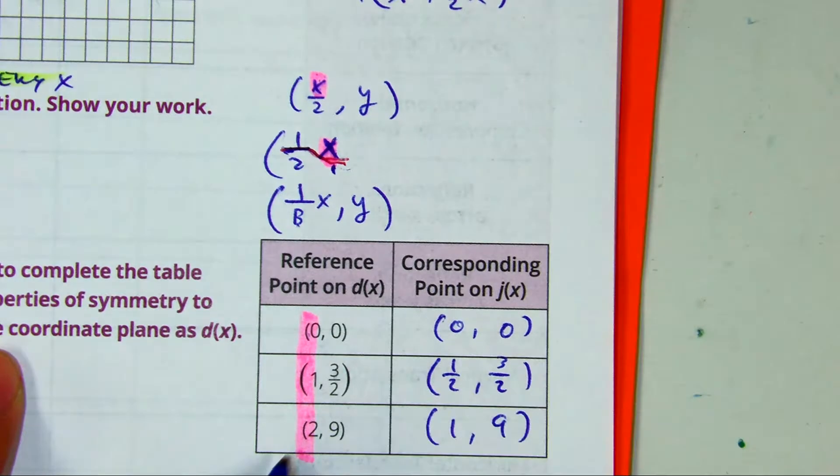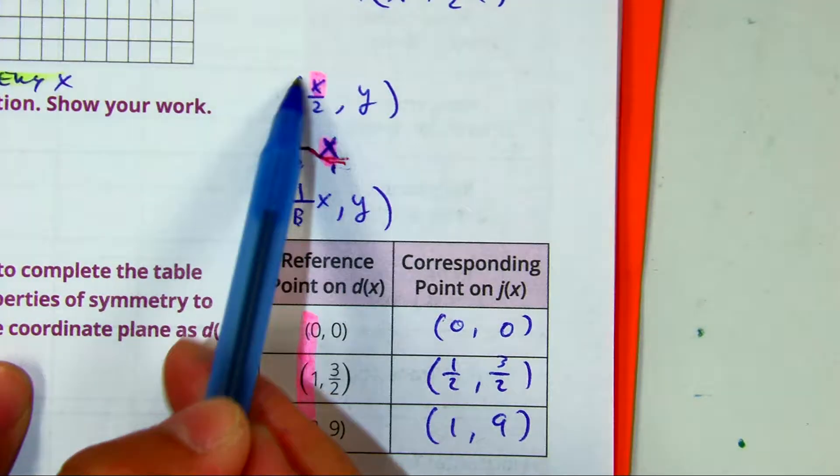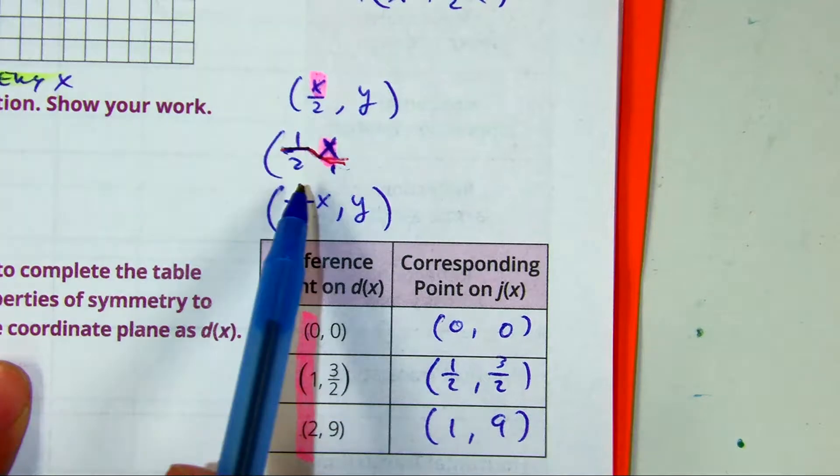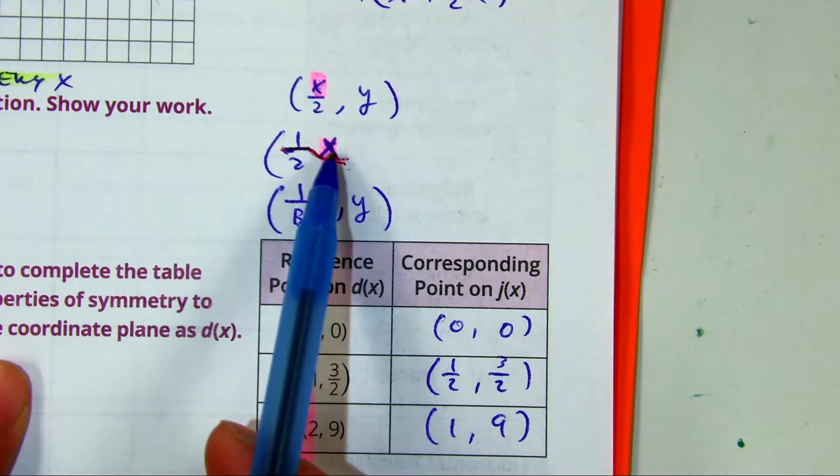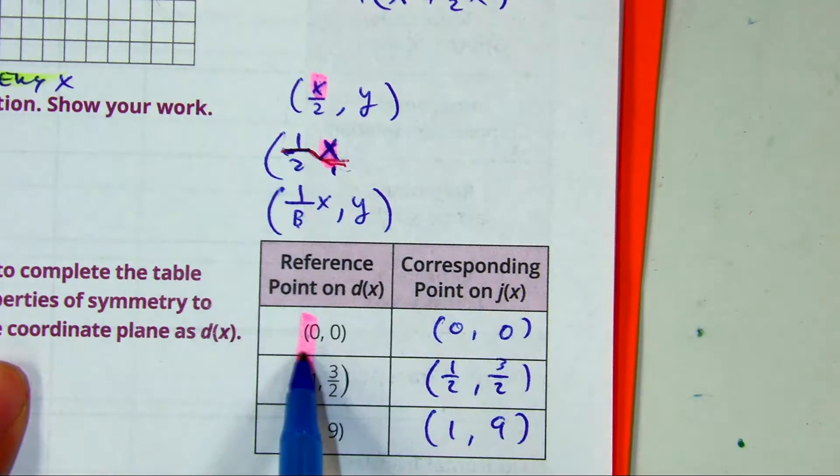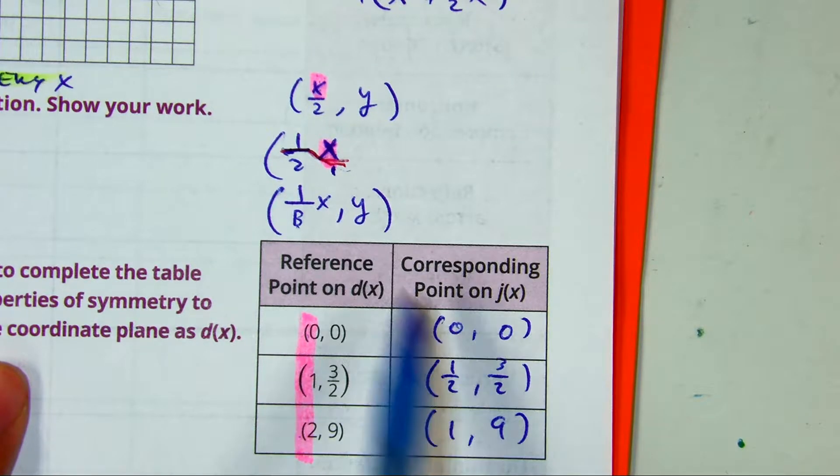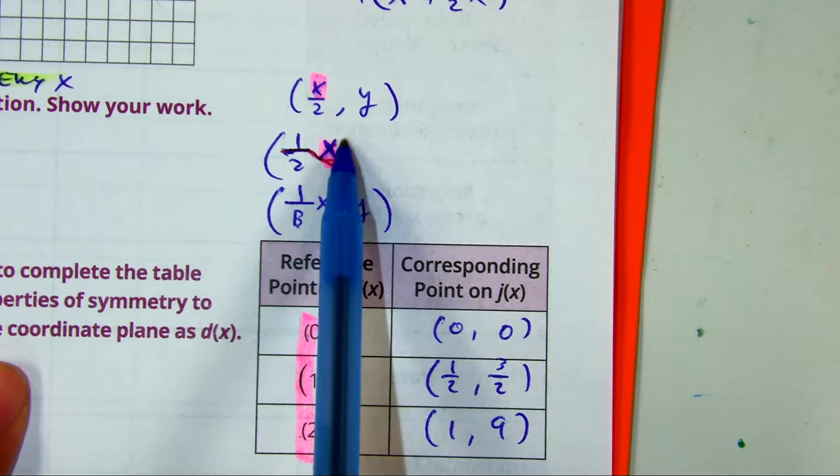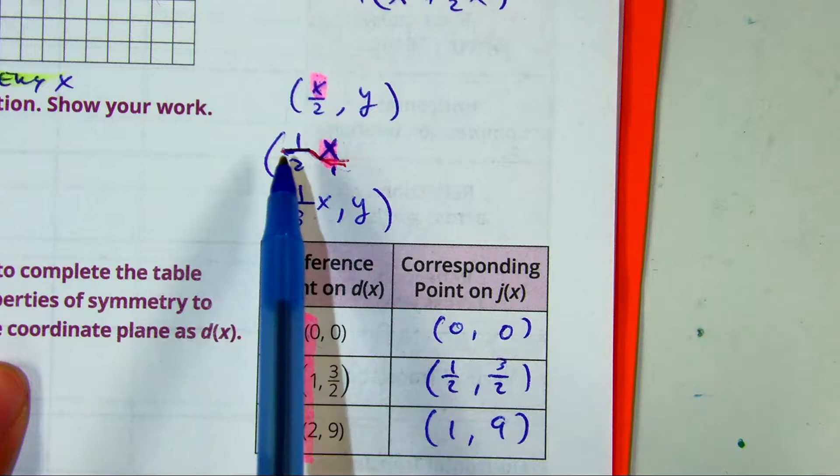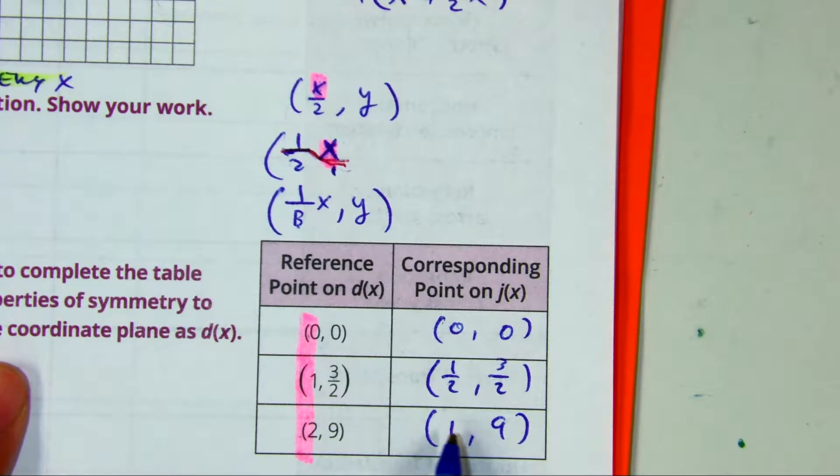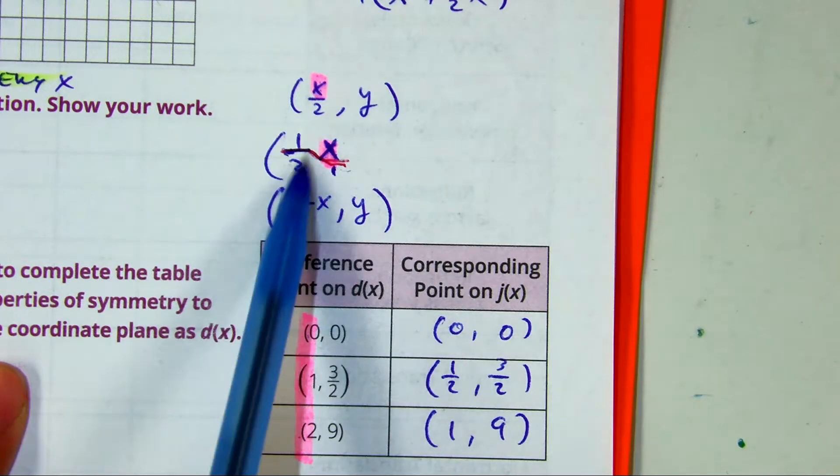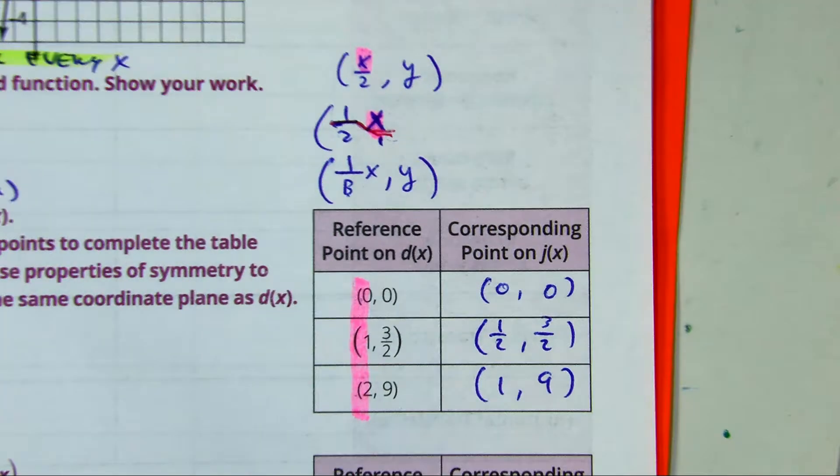Do you see how putting the 2 into this fraction was a lot easier than saying 1 half times that number? 1 half times 0 is 0. 1 half times 1 is 1 half. 1 half times 2 is 1. So at least this way you have an opportunity to see the different parts of the fraction. Okay, let's graph those.